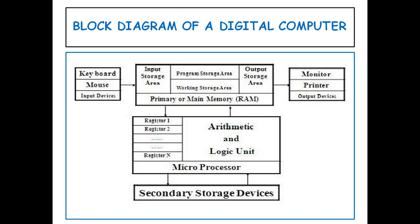The control unit controls all the activities or operations performed inside the computer system. It receives instructions directly from the main memory of the computer. When the control unit receives a set of instructions, it converts the instruction set into control signals, which are then sent to the central processor for further processing. The control unit understands which operation to execute and in what order. The arithmetic and logic unit is a combinational digital electronic circuit that can perform arithmetic operations on integer binary numbers. The ALU supports basic arithmetic and bitwise logic functions, and its output changes in response to the input.